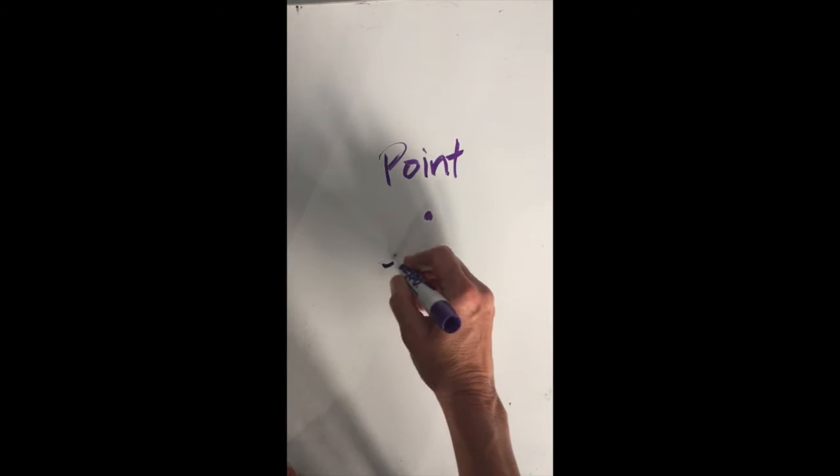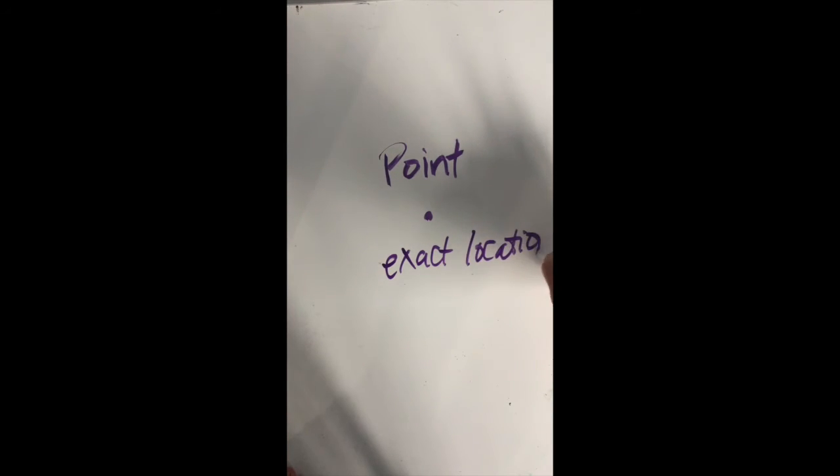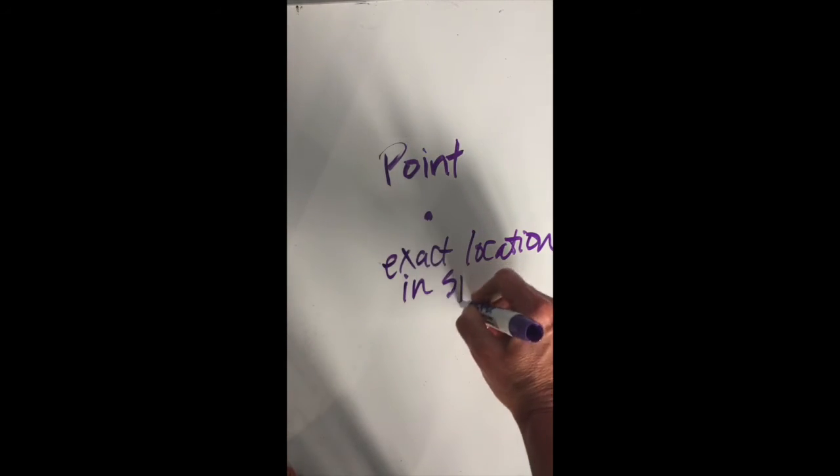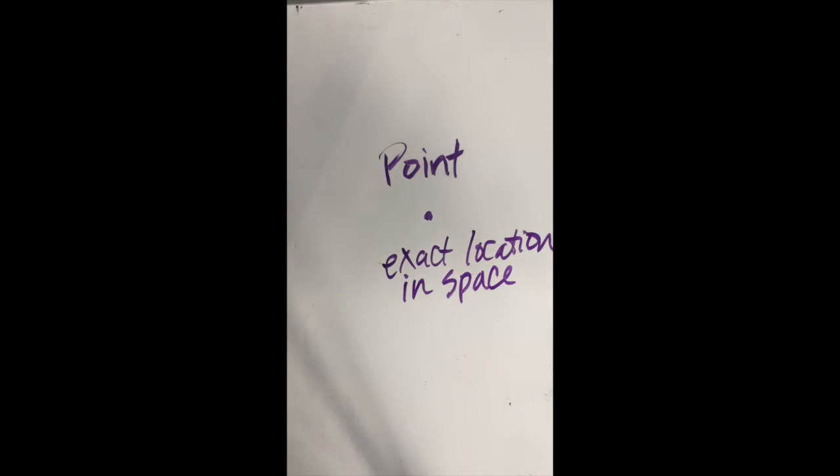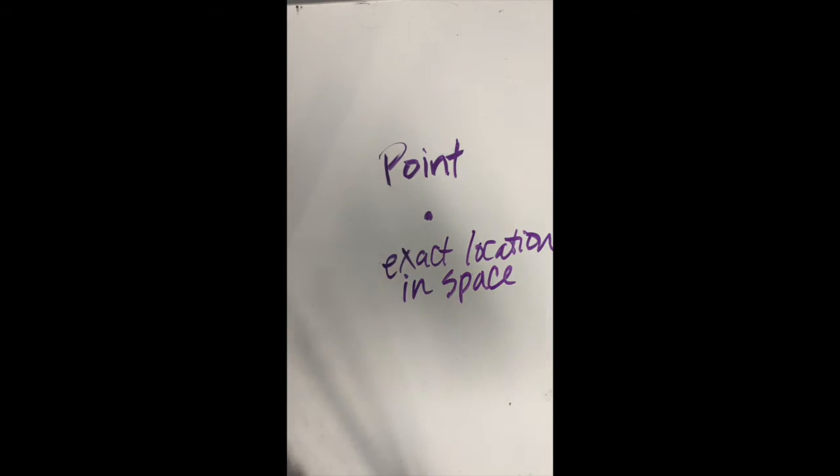The most basic geometric concept is that of a point. A point is an exact location in space. It doesn't have any size to it, but it's represented by a point and usually those points are labeled with a capital letter. So we would call this point A, and it is a building block for other geometric concepts.